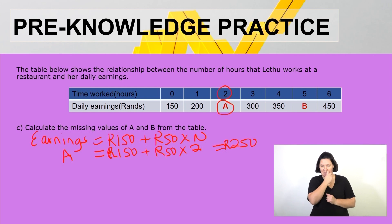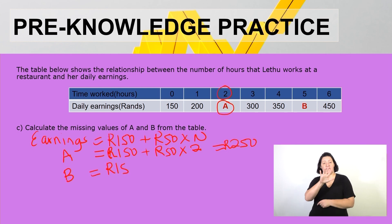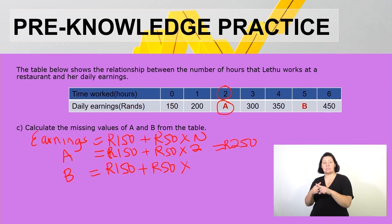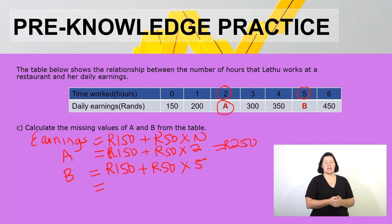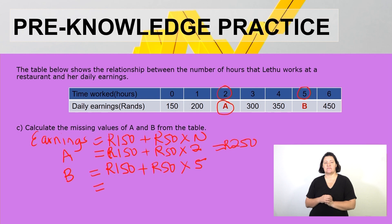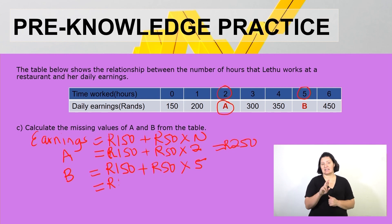We use the same formula to calculate the value of B, substituting n = 5 hours: B = 150 + 50 × 5. Calculating that gives us 150 + 250 = 400 rands. So the value of B is 400 rands.